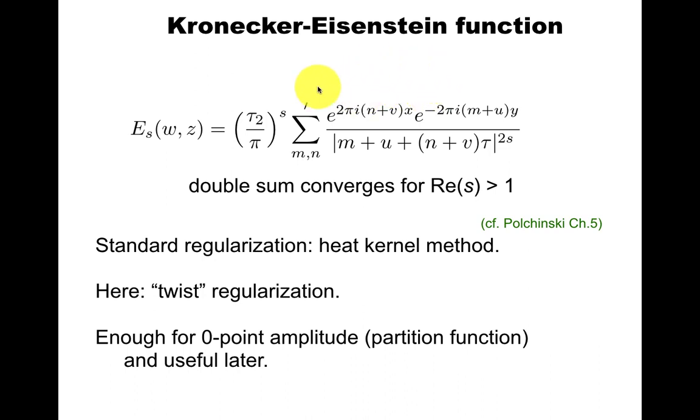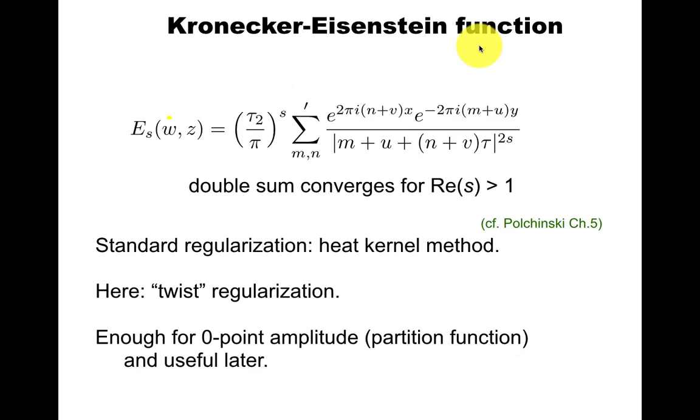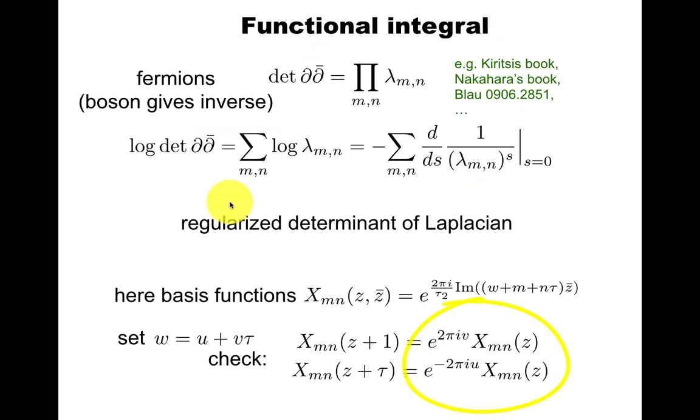So let's review how to compute the partition function using functional determinants. So this is a standard quantum field theory exercise. So you can formally write this as a product of eigenvalues, this operator. Imagine acting on some basis functions. As I did before, in terms of real variables, u and v, these are the quasi-periodicities of these basis functions. And I remind you that my twist w, I can think of as a regularization, so even if you're not interested in orbifolds, this could be a smart thing to do.